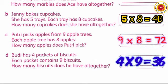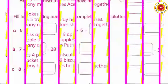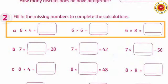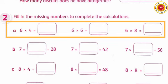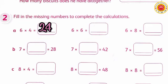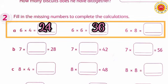Multiplication problems will be easier if you have already memorized your times tables. Next, section 2 — let's work through it. A: 6 times 4 equals 24. Next: 6 times 6 equals 36. Then: 6 times 8 equals 48.